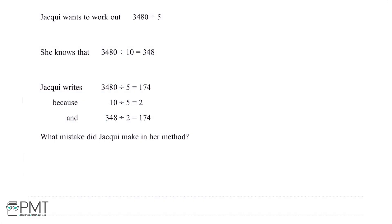Jackie wants to work out 3480 divided by 5. She knows that 3480 divided by 10 equals 348. Jackie writes 3480 divided by 5 equals 174, because 10 divided by 5 equals 2, and 348 divided by 2 equals 174. What mistake did Jackie make in her method?